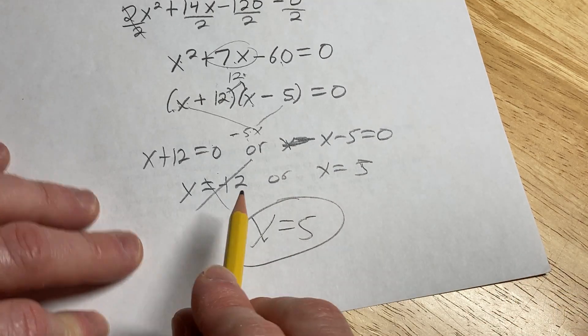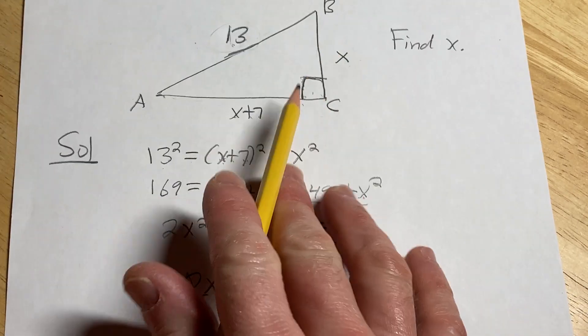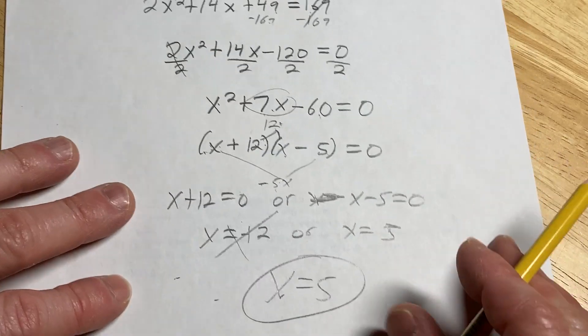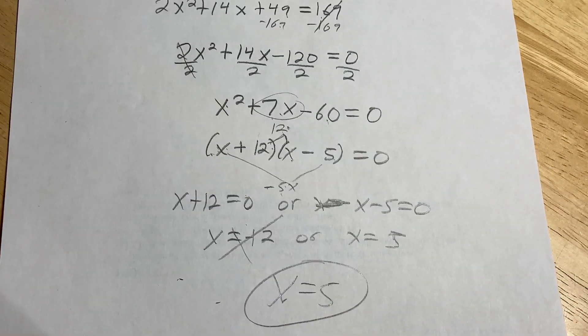It can't be negative because it's the length of the side of a triangle. So that's how you use the Pythagorean theorem to find the value of x. Hopefully that has helped someone out there in the world. Take care.